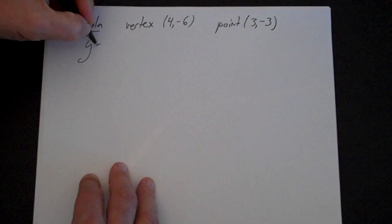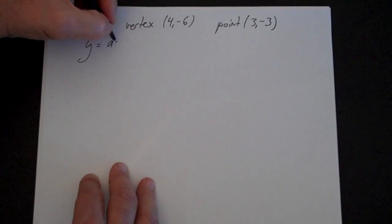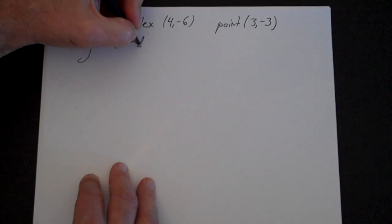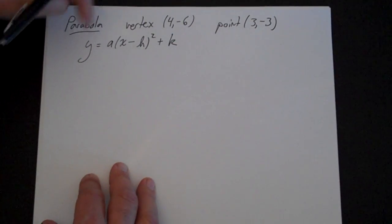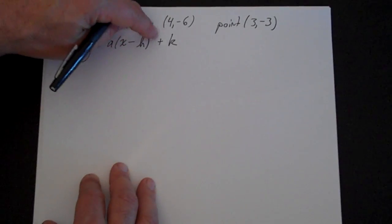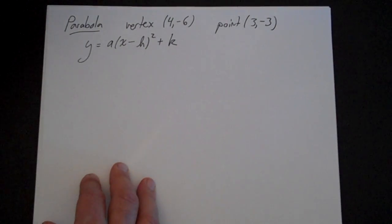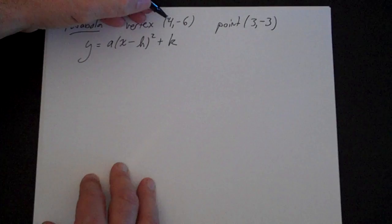To start here, you write out the general description of a parabola in hk form. So you have y = a(x - h)² + k. And you already know h and k because you know the vertex.